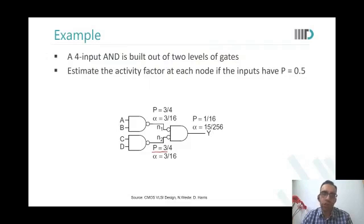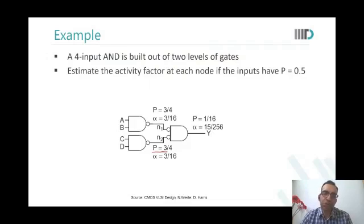For an OR gate, in how many cases will the output be 1? The student answers 3 out of 4, which is correct.